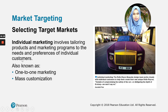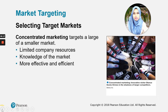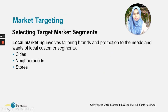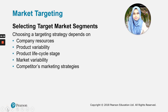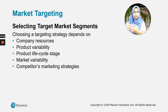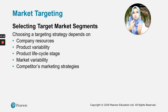Note that individual marketing is also known as one-to-one marketing or mass customization — don't confuse it with mass marketing, which is undifferentiated. Your choice of targeting strategy depends on company resources, product viability, variety of products, product life cycle stage, market viability, and competitors' marketing strategies. Sometimes it's good to follow competitors; other times it's better to develop your own strategy.